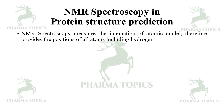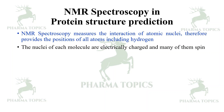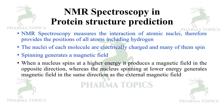NMR spectroscopy measures the interactions of atomic nuclei, therefore it provides the positions of all atoms including hydrogen. The nuclei of each molecule are electrically charged and many of them spin. Spinning generates a magnetic field. When a nucleus spins at high energy, it produces a magnetic field in the opposite direction, whereas a nucleus spinning at lower energy generates a magnetic field in the same direction as the applied external magnetic field.